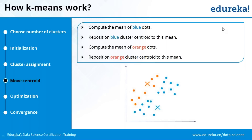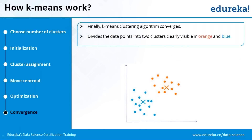The final step is convergence — the K-Means clustering algorithm converges, dividing the data points into two clusters clearly visible in orange and blue. This is how the convergence happens and the model stops. Regarding whether cluster formation depends on where centroids are initialized: the starting point should not bias the outcome — that should be the strength of the model. However, there are technicalities around global versus local minima, and if stuck in a local minimum, certain models can escape while others cannot.